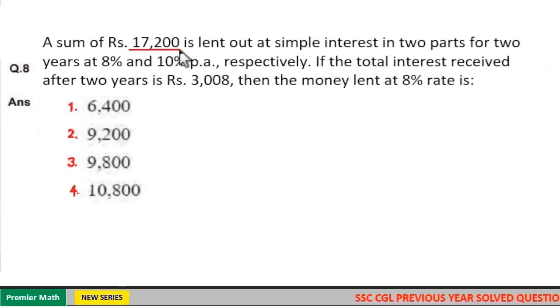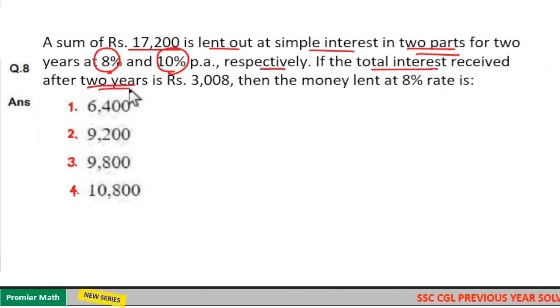A sum of Rs. 17,200 is lent out at simple interest in 2 parts for 2 years at 8% and 10% per annum respectively. If the total interest received after 2 years is Rs. 3,008, then the money lent at 8% rate is: